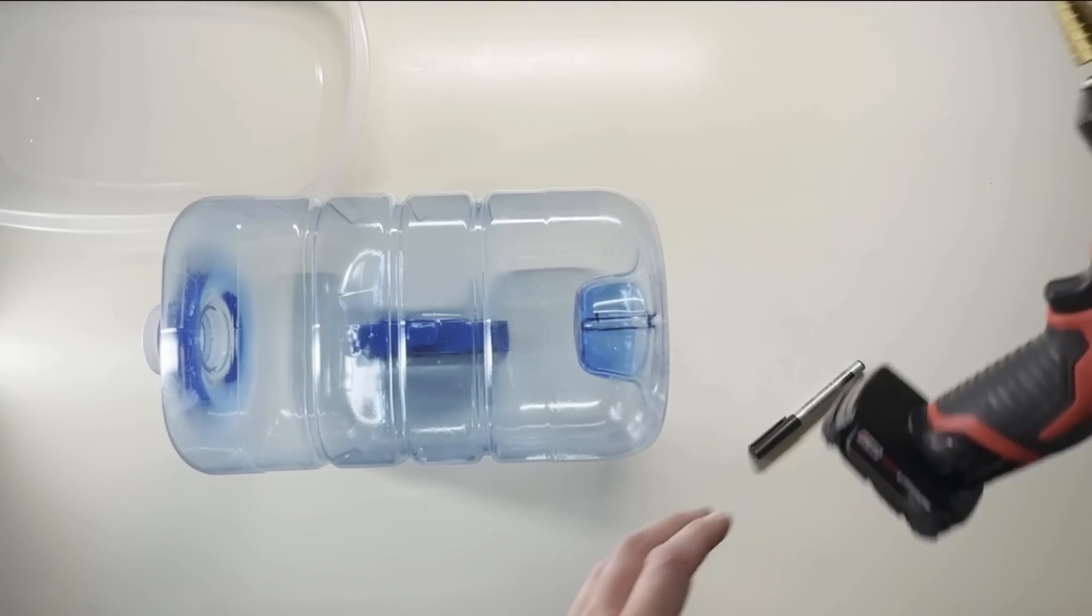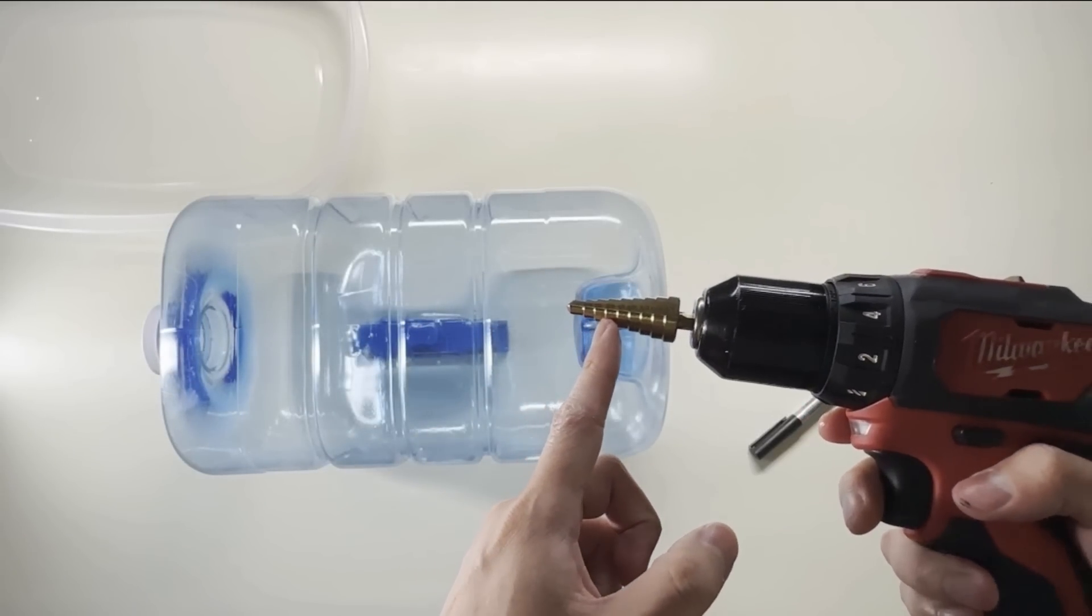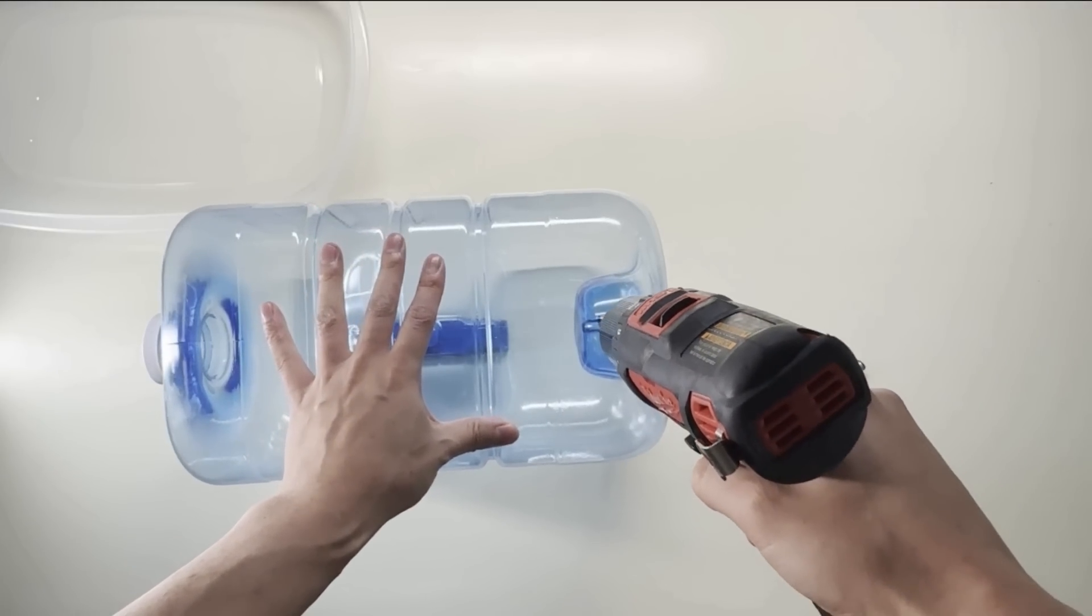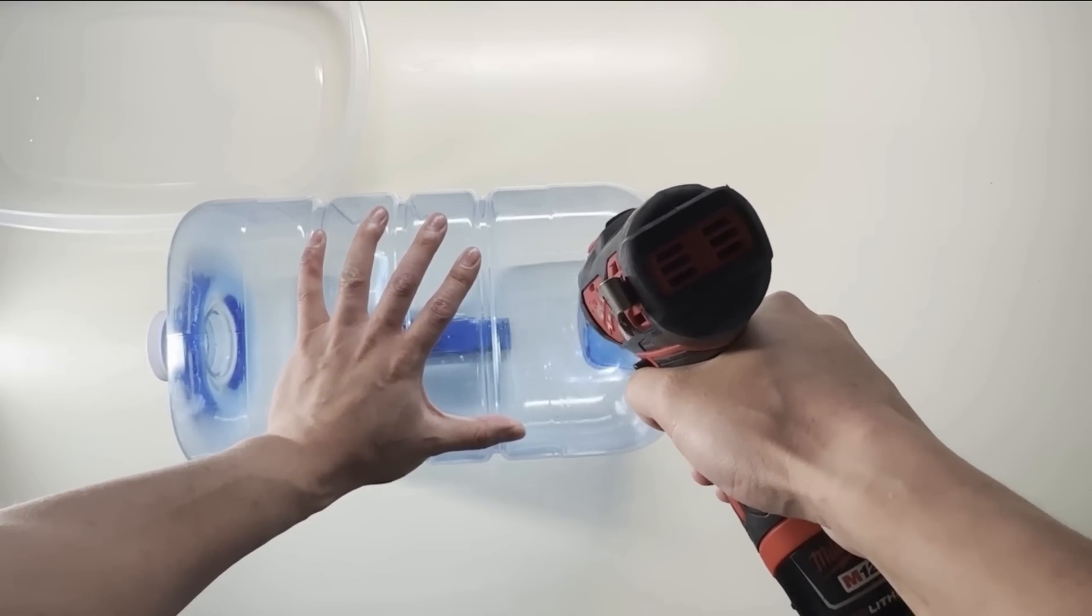The next step, using your power drill and the step drill bit, drill a hole where you made the mark and line it up. Make sure it's up to the half-inch mark on your drill bit.